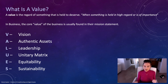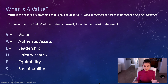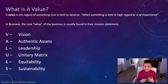We're going to start off with: what is a value? A value is something that is held in regard, held to deserve. When something is held in high regard, it means it's of importance. In the core of a business, you can usually find their values in their mission statement. I've put together a matrix of the word VALUES. We're going to cover: vision, authentic assets, leadership, the unitary matrix, equitability, and sustainability.